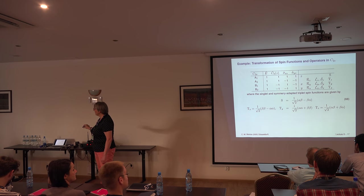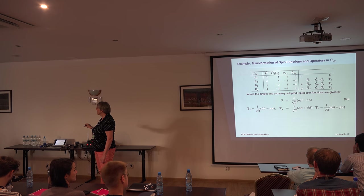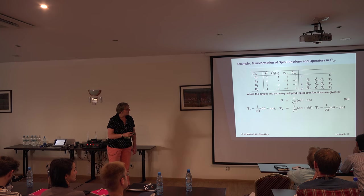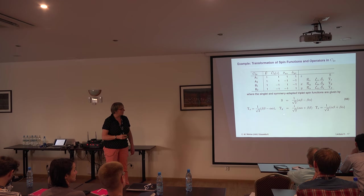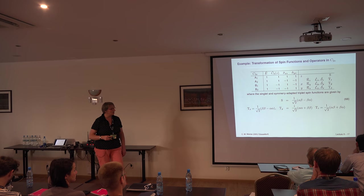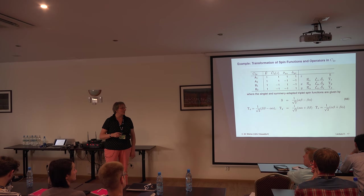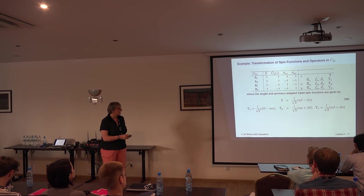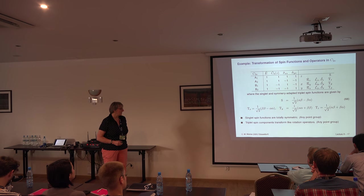The Z component of a triplet transforms like rotation about Z, and so on. In a C2V symmetric molecule you do not have MS = ±1 components directly; you have linear combinations of these, so you have to work with that.